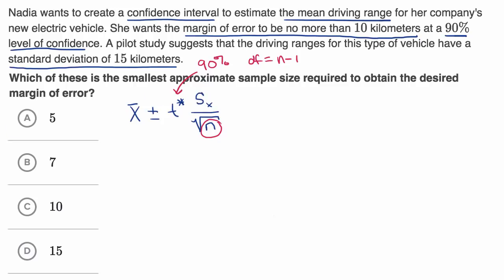So instead of that, what we could think about, we know that another legitimate way to construct a confidence interval on the margin of error is to say, I can take my sample mean and I can add or subtract a z score, a critical value, and this time use a z table, where if I multiply that times the true population standard deviation and divide that by the square root of n. Now, you might say, well, I don't know the true population standard deviation, but they tell us a pilot study suggests that the driving ranges for this type of vehicle have a standard deviation of 15 kilometers. So we could use this as an estimate of our true population standard deviation. So this is 15 kilometers right over here.